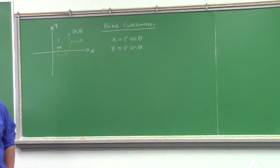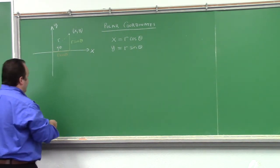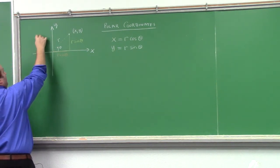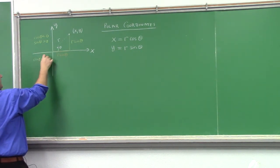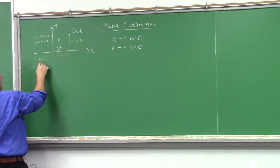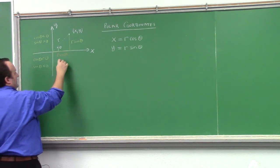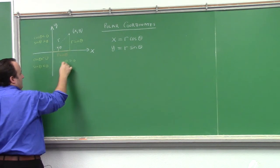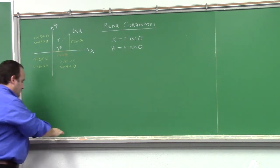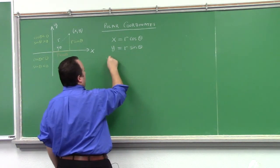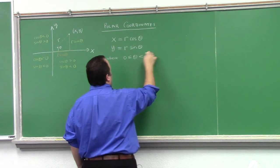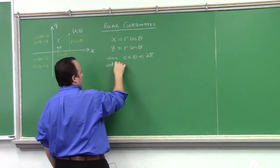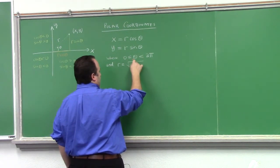The cool thing is, the way we've defined sine and cosine, these formulas equally extend to the other quadrants. In quadrant two, cosine theta is less than zero and sine theta is greater than zero. In quadrant three, both cosine theta and sine theta are less than zero. In quadrant four, cosine theta is positive and sine theta is negative. As a starting point, we say zero ≤ theta < 2π, and R equals the square root of x squared plus y squared.